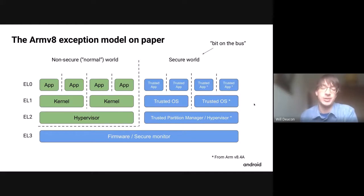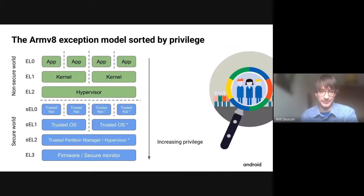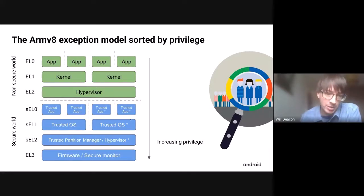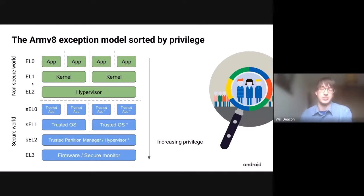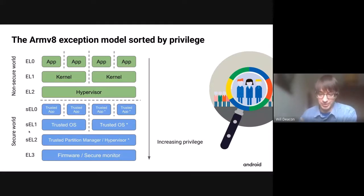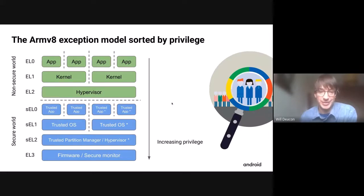If you reorganize that diagram in terms of privilege — your ability to access or map physical memory — the secure world sits underneath the non-secure world, because secure world can access all of non-secure memory (you just set a bit in the page table to map it non-secure). But you can't do it the other way around: non-secure world cannot map secure memory. If it tries to set the secure bit, it's ignored by the MMU. This means a trusted OS can map all of hypervisor memory, and if it offers some kind of mmap call down to a trusted app, maybe that app can also map all of hypervisor memory.